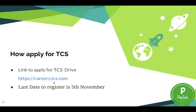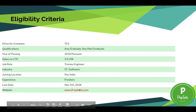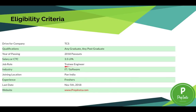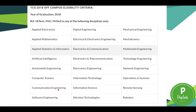To apply for TCS, visit careers.tcs.com. For 2018, the last date of application is the 5th of November. The off-campus drive is on the 13th of November. Regarding the 2018 eligibility: 2018 passouts are eligible, the salary is 3.5 LPA, the role is Trainee Engineer, the job location can be any tier-1, 2, or 3 city in India, and no prior experience is needed.